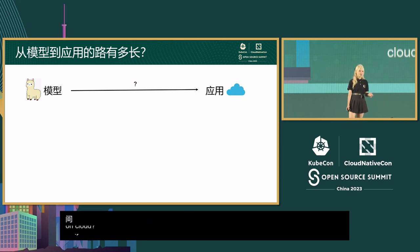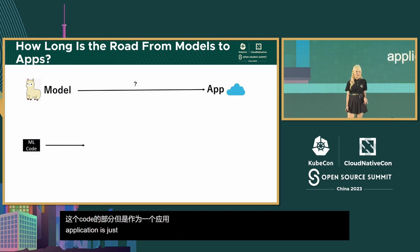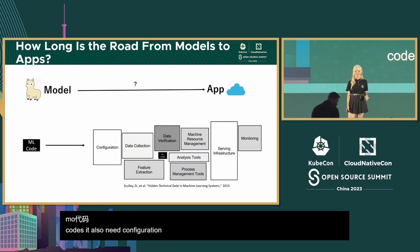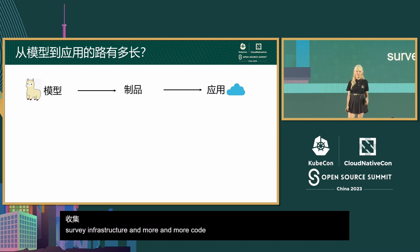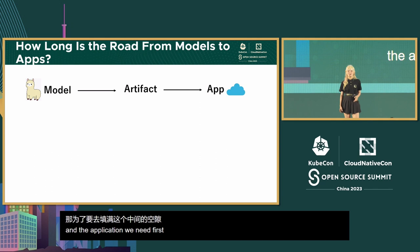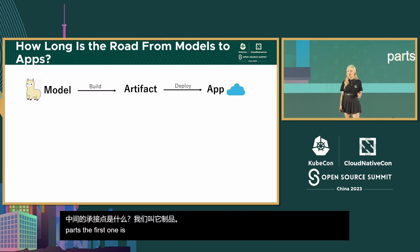If we delve deeper into this, we can consider a model as ML code. But an application is far more complex — it also needs configuration, data collection, serving infrastructure, and more. ML code is just a part of it. To bridge the gap between model and application, we need an intermediate artifact so we can divide the whole process into two parts: build and deploy.